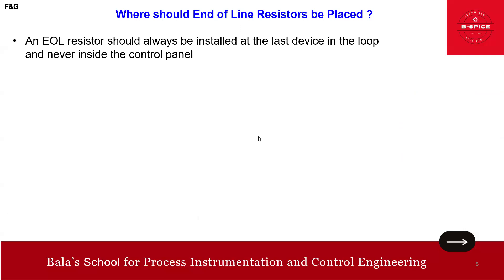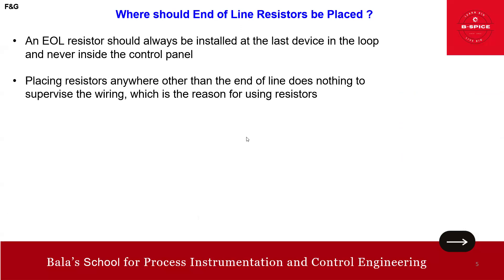Where should the end-of-line resistor be installed? It should always be installed at the last device in the loop and never inside the control panel. Placing the resistor anywhere other than the end of line does nothing to supervise the wiring, which is the entire reason for using it.